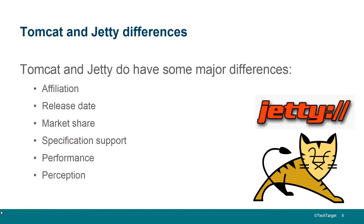The release date is a bit different. Jetty came out in 1995, whereas Tomcat was closer to the turn of the century, around 1998-99. Jetty has gone through a number of different incarnations — since Java was released in 1996, the original Jetty couldn't have been written in Java. But they've moved closer and closer to a full Java implementation, as has Tomcat.